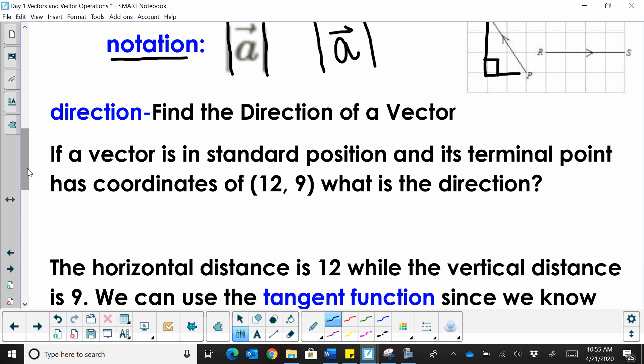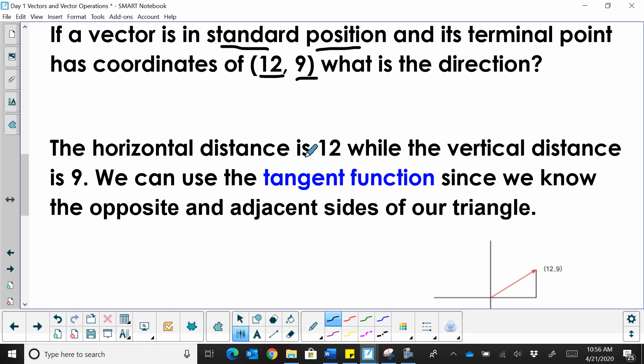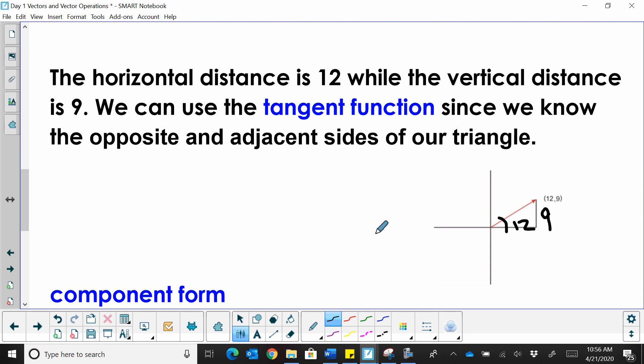Now, direction. Let's talk a little bit about direction. To find the direction of a vector, you're going to use a tangent formula. So if a vector is in standard position, meaning it starts at the origin, and its terminal point has the coordinates 12, 9, what is the direction? So let's look at that. The horizontal distance would be 12. So I'm going to label this as 12. The vertical distance would be 9. So really, we're looking at the point 12, 9. So what is this angle that it creates?